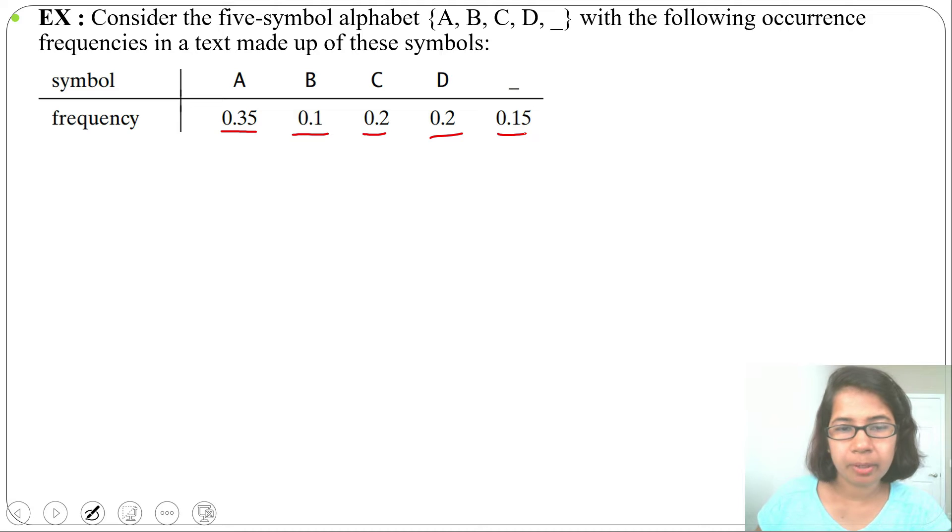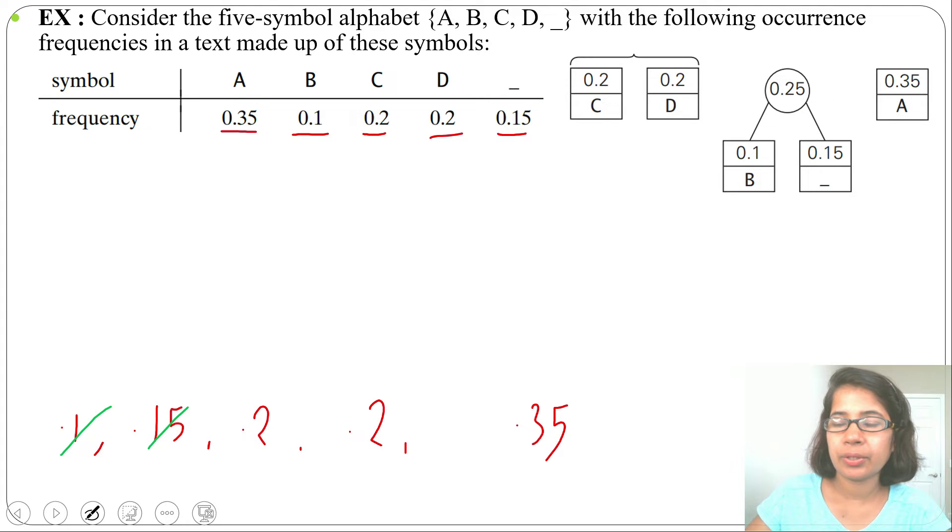First, I will write all the frequencies in ascending order: 0.1, 0.15 for underscore, 0.2, 0.2 for C and D, and 0.35. First we'll merge the minimum two, that is 0.1 and 0.15. So 0.1 plus 0.15 equals 0.25. Now insert this 0.25 in the queue. 0.25 will be after 0.2 and before 0.35.